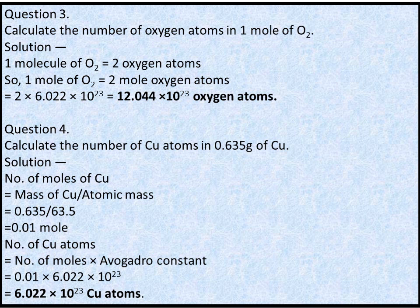Q4: Calculate the number of copper atoms in 0.635g of copper. Atomic mass of Cu = 63.5. Number of moles = 0.635 ÷ 63.5 = 0.01 moles. Number of copper atoms = 0.01 × 6.022 × 10²³ = 6.022 × 10²¹ atoms.